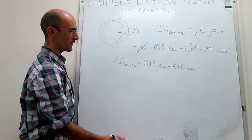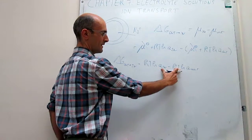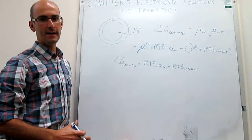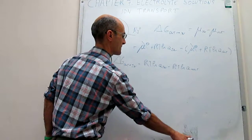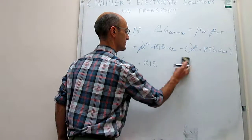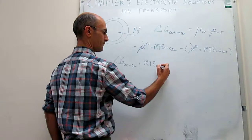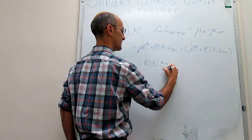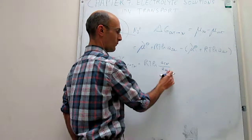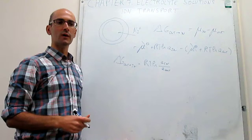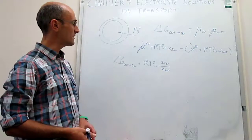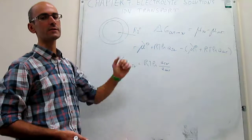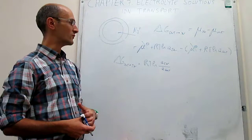We can consolidate by taking RT as a common factor and combining the two natural logs as the natural log of the ratio: ΔG = RT·ln(a_in / a_out). We have also learned how to map those activities into molar concentrations, and that is something we will have to do in this case because the species are all going to be solutes in a dilute solution.